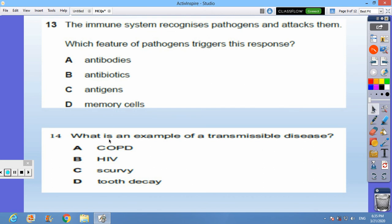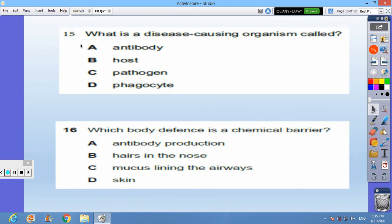Question 14: what is an example of transmissible disease? B, HIV. Question 15: what is a disease-causing organism called? Pathogen, C. Question 16: which body defense is a chemical barrier? C, mucus lining the airways.